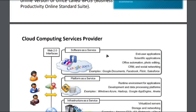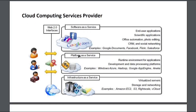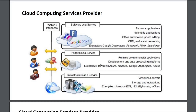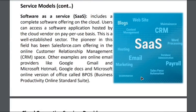More SaaS examples include Google Documents, Facebook, end-user applications, scientific applications, office automation, photo editing, CRM, and record keeping — basically everything we use as a software. PaaS provides the runtime environment, like Windows Azure, AWS, and Google Cloud. IaaS covers all infrastructure and hardware processes — like EC2 virtualized servers, instances, storage devices like EBS storage, and network interfaces.